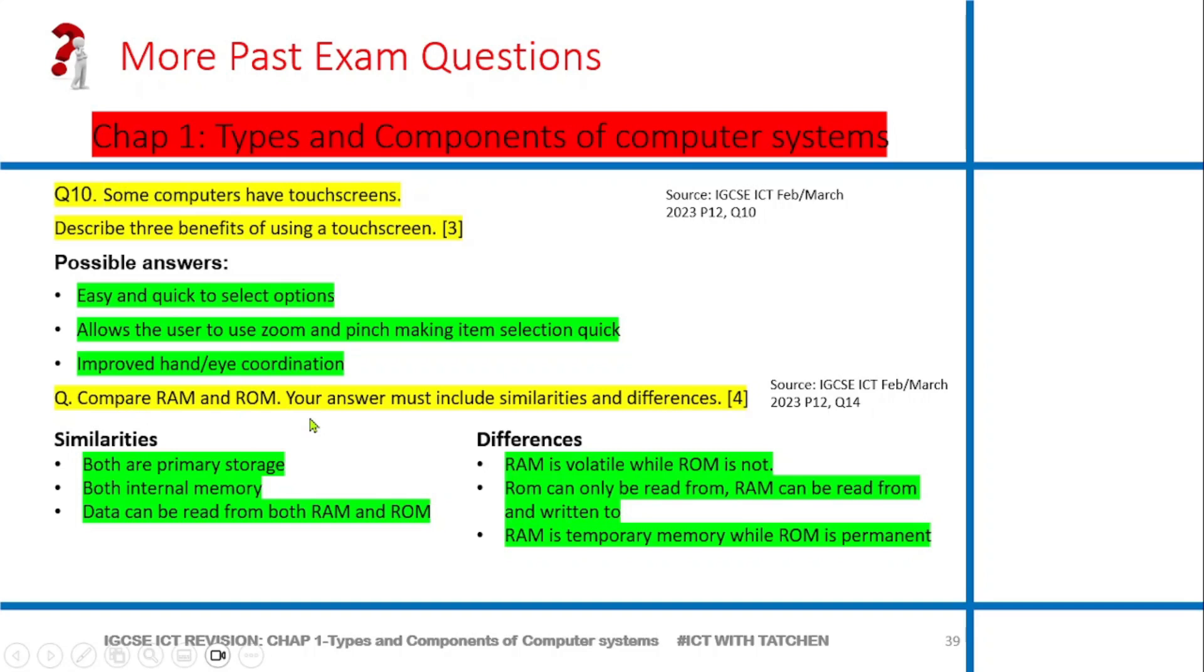Compare RAM and ROM. We've seen that question from before - it was one of the first questions we looked at comparing RAM and ROM. When they say you should compare, you know that you have to give differences and similarities. If I tell you to compare between two people, you're giving their differences and similarities. What are similarities? Both are primary storage, both are internal memory. Data can be read from both RAM and ROM. Differences: RAM is volatile while ROM is not. ROM can only be read from, you cannot write to the ROM. RAM is temporal memory while ROM is permanent. These are very good points. It's four marks, so you can give two here and two here.